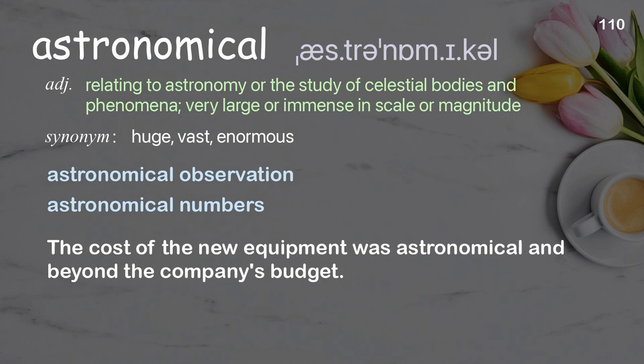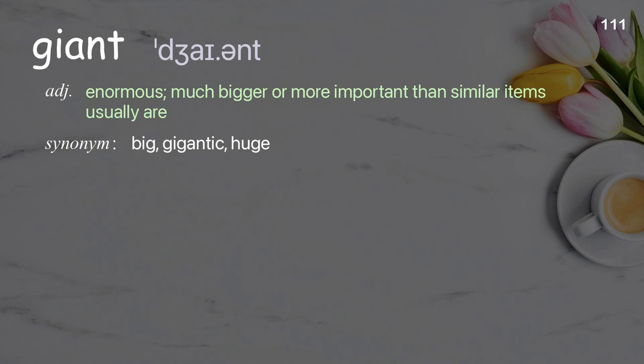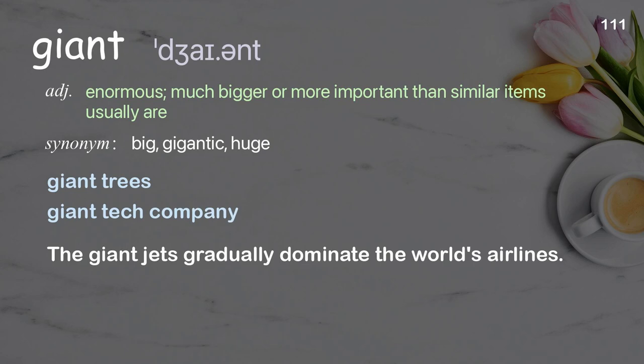Giant: extremely big; much bigger or more important than similar items usually are. Examples: giant trees, giant tech company. The giant jets that gradually dominate the world's airlines.